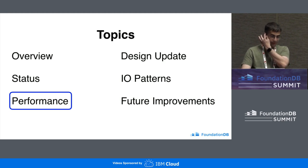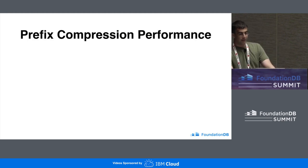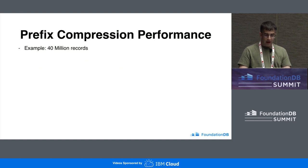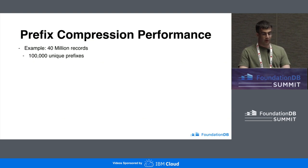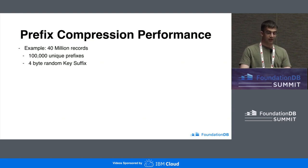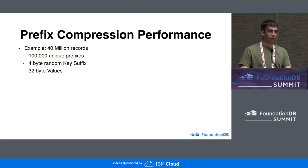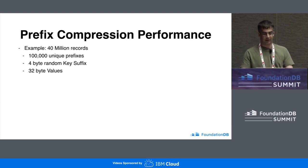Next, I'd like to talk about performance — specifically performance with compressible prefixes. This avoids most of the unoptimized parts that still exist in Redwood. The data set is 40 million records. Each record exists under one of 100,000 unique prefixes, and each key has a random four-byte suffix. The values are 32 bytes of random data. The inserts are mostly localized under one of the prefixes — groups of inserts are done together under one of the 100,000 unique prefixes.